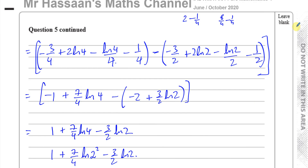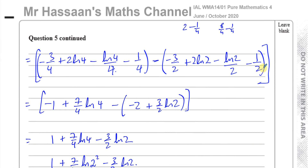Thank you for watching. The other questions from this June-October 2020 P4 paper can be found on the playlist appearing at the top of the screen. The integration topic playlist should also appear on screen. A subscribe icon is in the middle of the screen, and the card shown during the video links to another P4 paper. The paper and mark scheme can be found via the description box below. Thank you and see you soon.